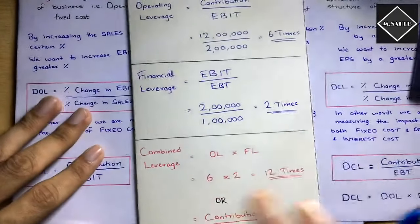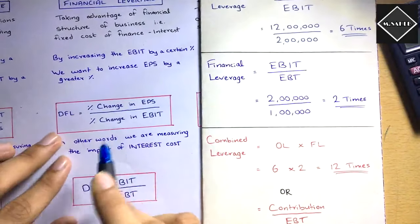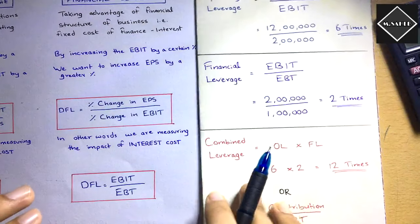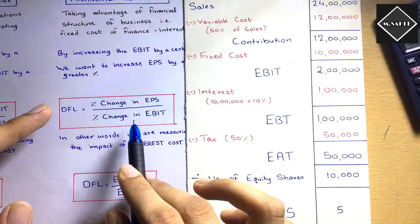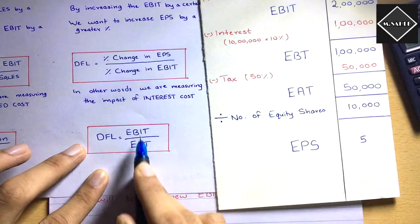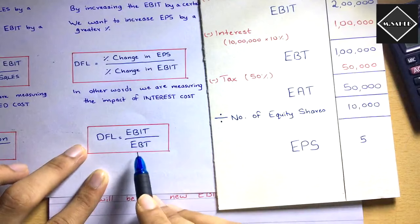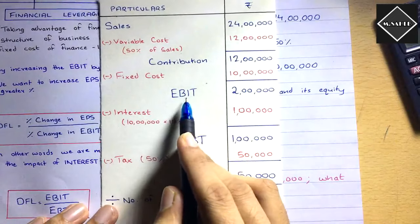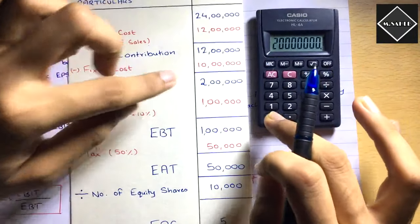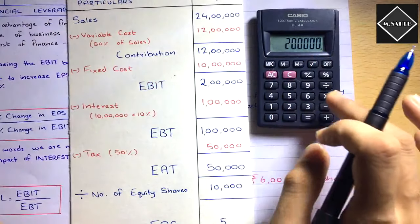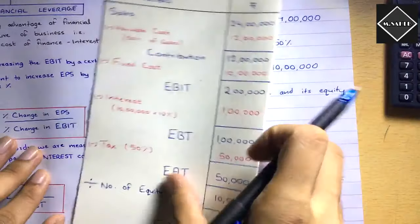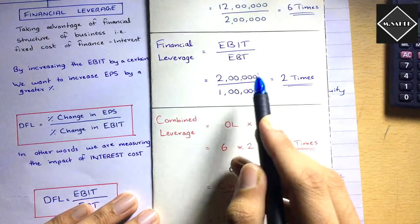For financial leverage, we use the shortcut formula: DFL = EBIT ÷ EBT. We already have EBIT = 2 lakh and EBT = 1 lakh. So DFL = 2 lakh ÷ 1 lakh = 2 times.